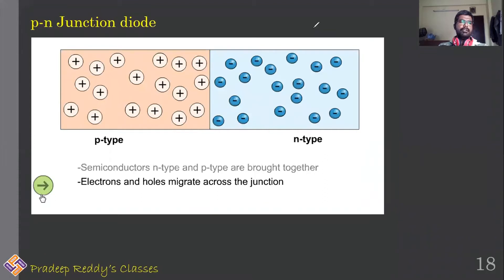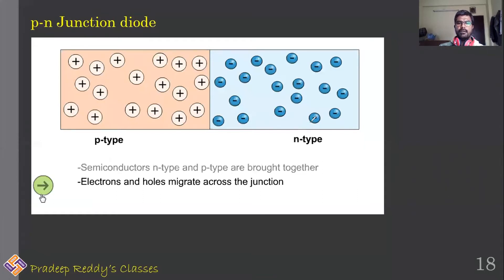In the past few video lectures we have learned about intrinsic and extrinsic semiconductors. Intrinsic semiconductors are pure semiconductors and extrinsic semiconductors are formed by doping. Extrinsic semiconductors can be p-type or n-type. In a p-type semiconductor majority charge carriers are holes, and in n-type semiconductors majority charge carriers are electrons.